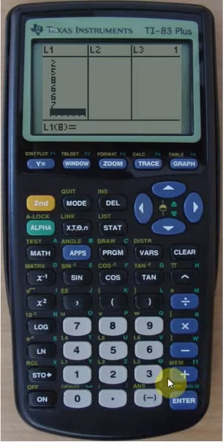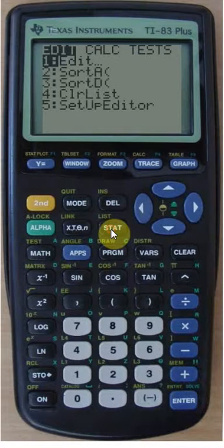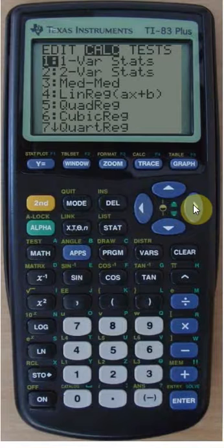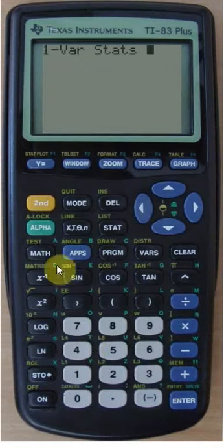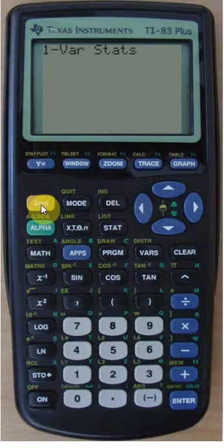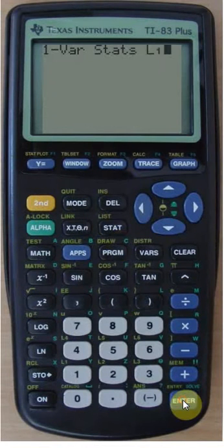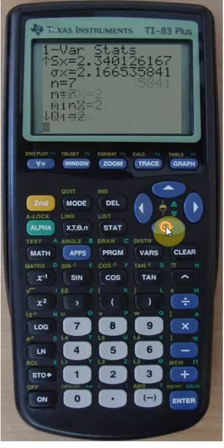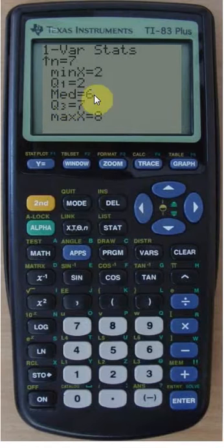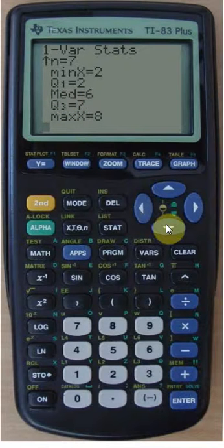And to obtain some basic calculations you can go to the stat menu, calculate and then number 1, one variable statistics. So enter. By default it will actually assume list 1 but just to be sure second list and indeed list 1. Enter. The x bar is the average, 5.14 and if we scroll down then we'll find the median being 6 and notice that there is no mode.